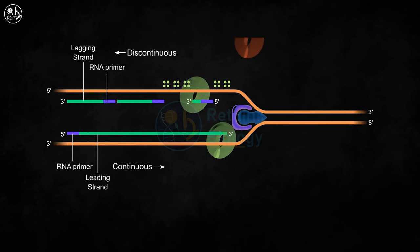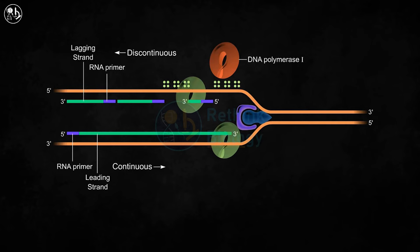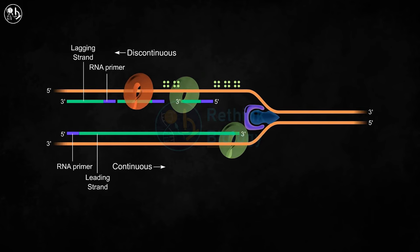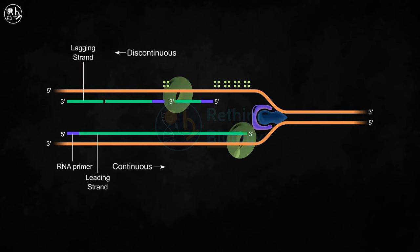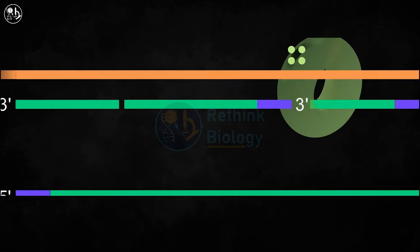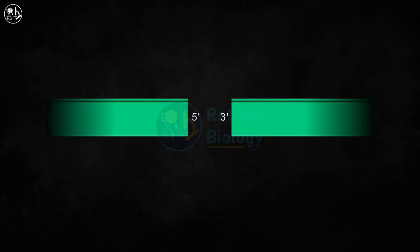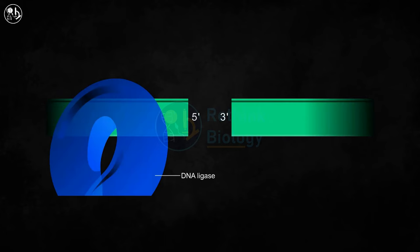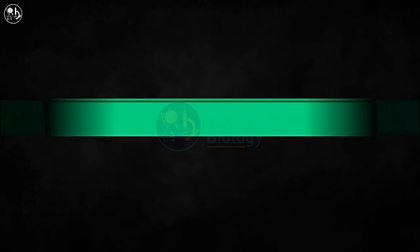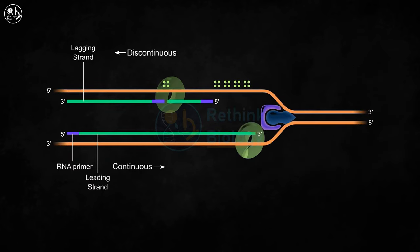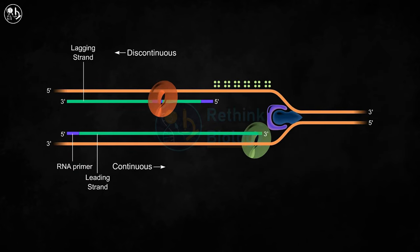When a new Okazaki fragment synthesis begins, the previous two Okazaki fragments are joined together by DNA polymerase I into a continuous strand. DNA polymerase I removes the RNA primer and replaces it with DNA. After the nucleotide replacement, a single-stranded gap still remains between two adjacent nucleotides. That gap is sealed by an enzyme named DNA ligase, resulting in a longer continuous DNA strand. As the DNA continues to unwind, this process gets repeated.